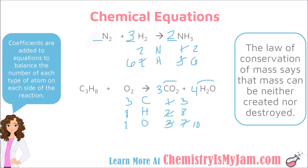Carbon is fixed, hydrogen is fixed — now look at oxygen. There are 10 on the right and 2 on the left. Placing a coefficient of 5 in front of O₂ changes the 2 to 10, completing the balanced equation. Checking: 3 carbons on both sides, 8 hydrogens on both sides, and 10 oxygens on both sides (5 × 2 = 10 on the left; 3 × 2 + 4 = 10 on the right). This is a balanced reaction.